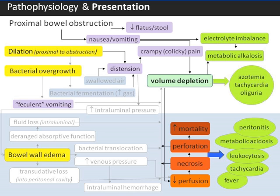Abdominal distension is generally more dramatic with more distal obstruction — think massive distension in sigmoid volvulus, for example — or with long-standing obstruction. Knowledge of these clinical findings can help you elicit an appropriate medical history when the time comes.